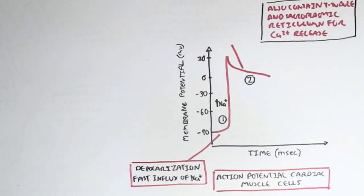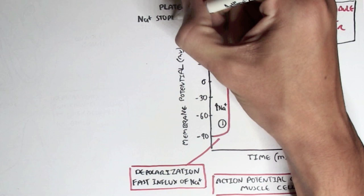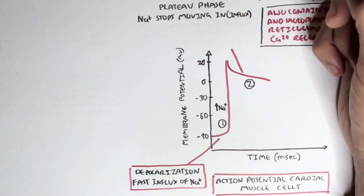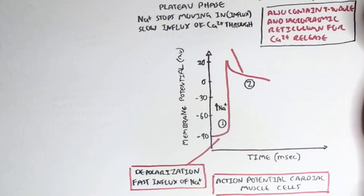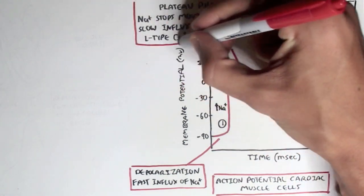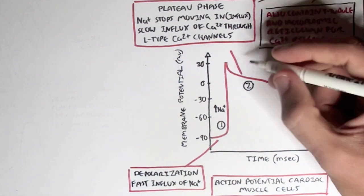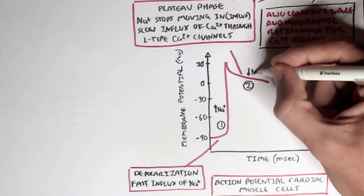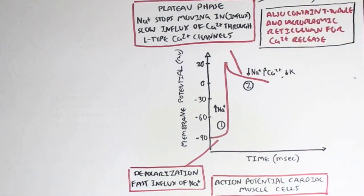After depolarization, there is a plateau phase where the sodium ions stop moving in — the sodium channels close — but there's a slow influx of calcium ions through the L-type calcium channels, moving from the outside to the inside. So there's still a sort of positively charged membrane potential, with no more sodium moving in but a slow movement of calcium ions from outside to inside.